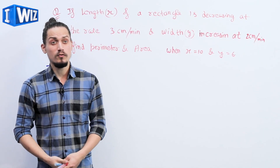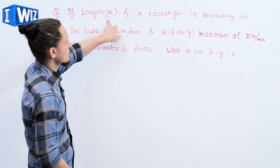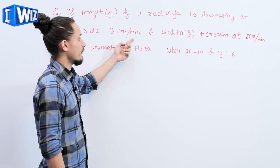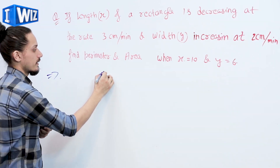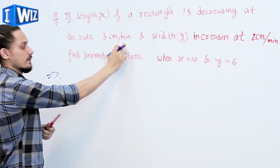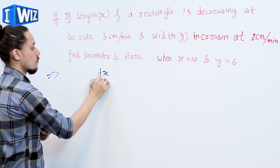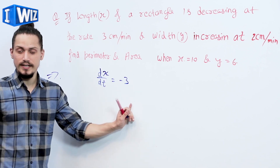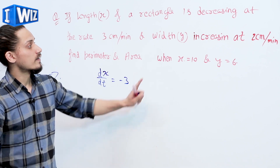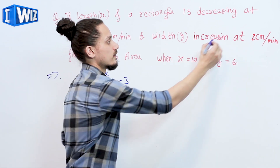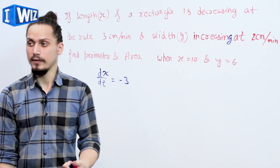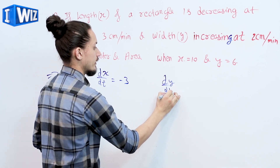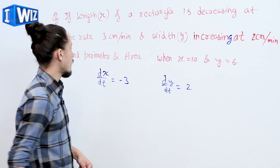In this example, we are given that the length x of a rectangle is decreasing at the rate of 3 centimeters per minute, so dx/dt equals negative 3. The width y is increasing at the rate of 2 centimeters per minute, so dy/dt equals positive 2.